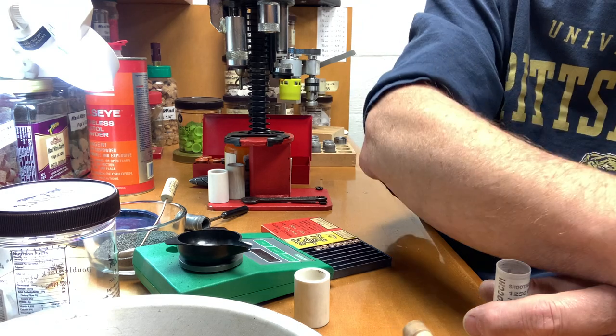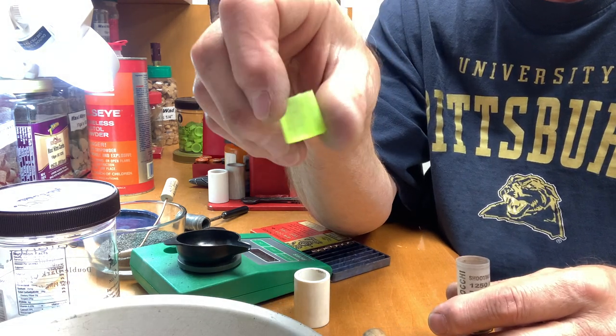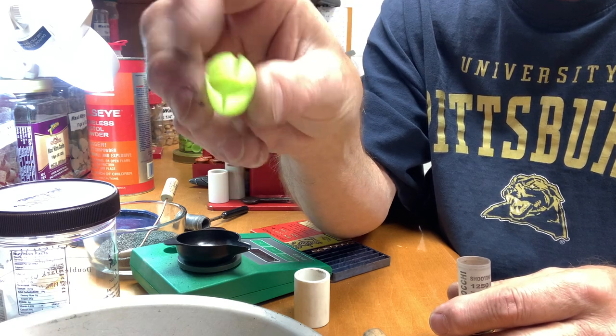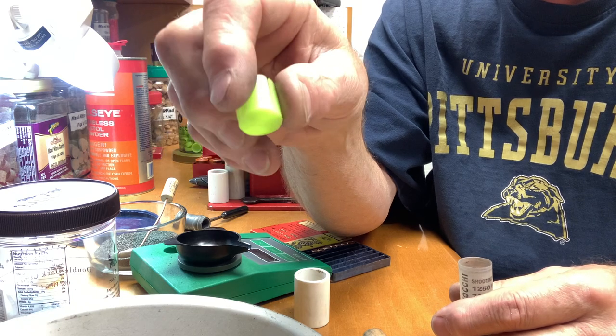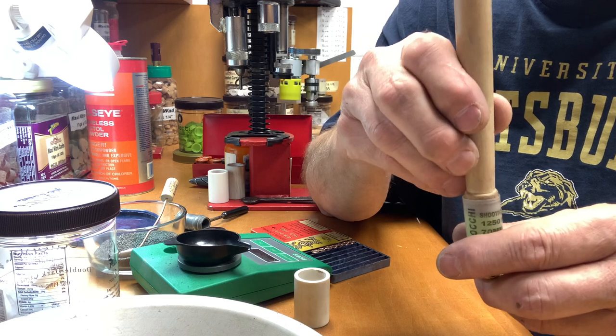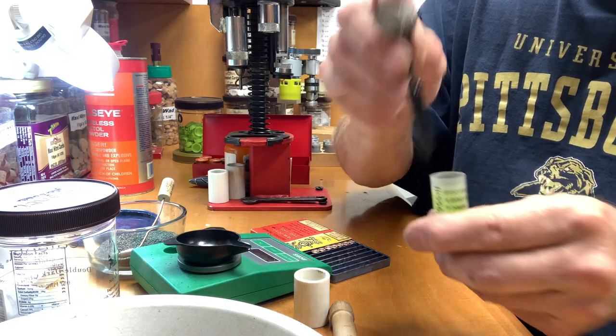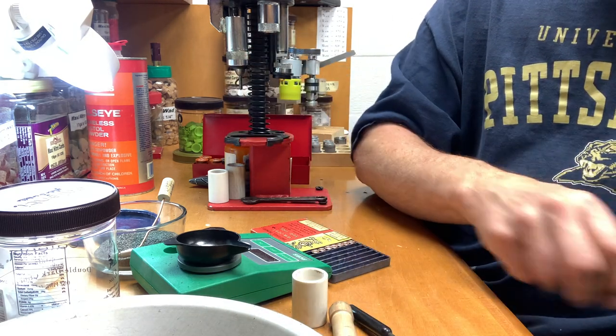Now this is a shot cup, just a shot cup from a Clay Buster 7/8 ounce load with the compression and the gas seal taken off the bottom. Put that down in there and get it seated down in there nice, right on top of that gas seal. Now you want to take...